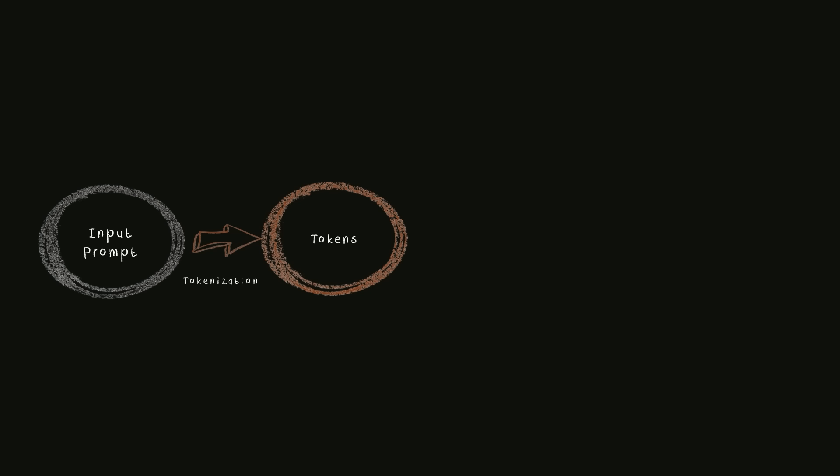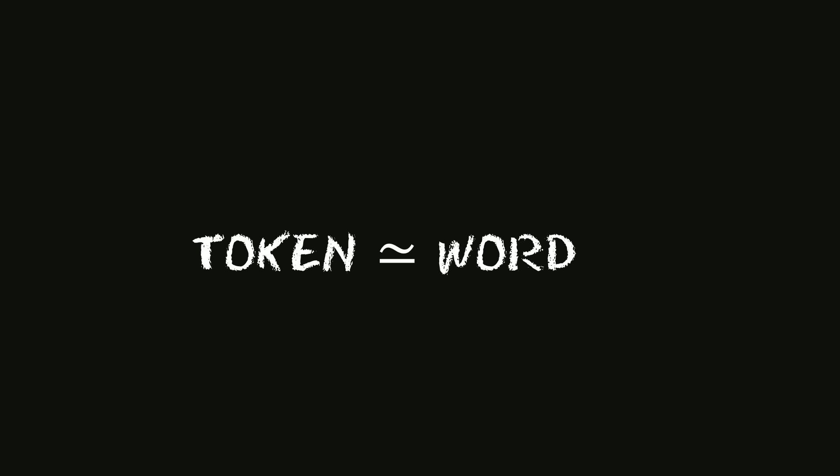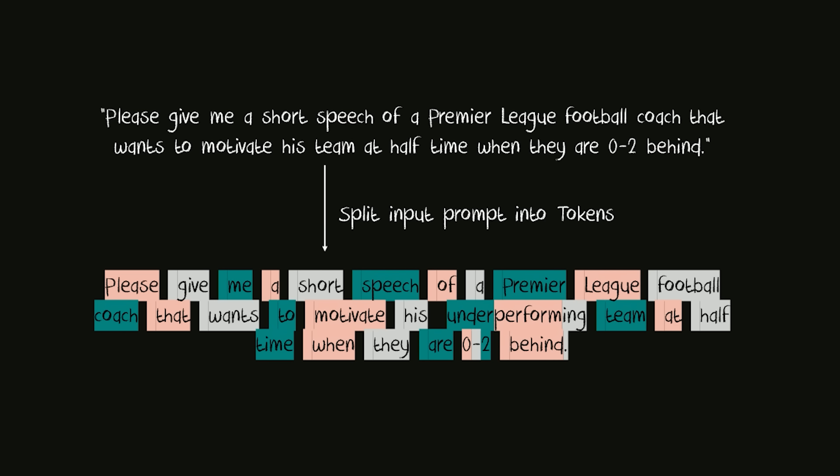Please give me a short speech of a Premier League football coach that wants to motivate his team at halftime when they are zero-two behind. The first thing the LLM will do is split the input prompt into smaller, more manageable pieces. These pieces are what we call tokens. These tokens could be words, parts of words, or even characters, depending on the model's design. But in most cases, a token equals a word. So in the future, whenever I talk about a token, think of it as a word.